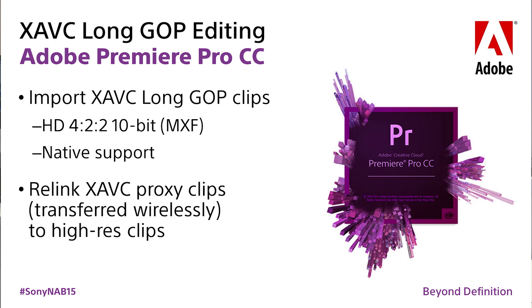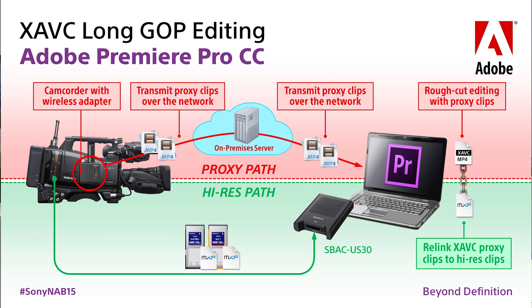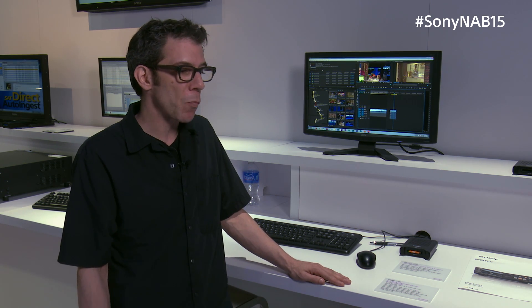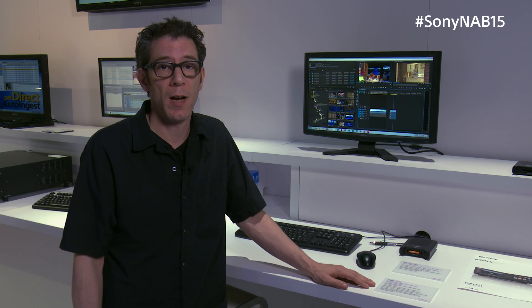Over here we have Adobe Premiere Pro CC. What we're demoing here is a full proxy to full-res relink using our new AVC proxies created by the PXW X500 camcorders and the CBK WA100 proxy recorders. In Premiere we very elegantly import those AVC proxies, which can be up to 8 megabits per second at 30p. We put those on the timeline, do our assembly or offline edit, and with a very simple two or three click process we conform those AVC proxies to the full-res XAVC Longop or full-res XAVC Intra files.